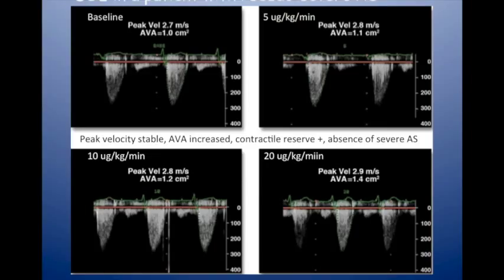What about imaging of the annulus? This is really important. If you get it wrong, something will go wrong during the TAVI procedure — usually the valve will eject, you'll have paravalvular regurgitation. If the sizing is wrong and the valve is too big, you might have valvular regurgitation because the leaflets don't open properly. Getting the sizing of the aortic annulus right — which determines the prosthesis type and size — is really critical.